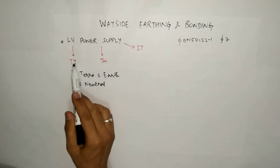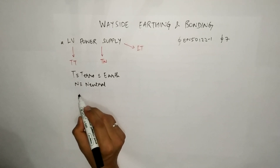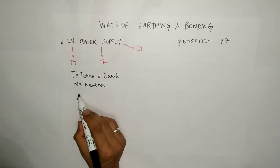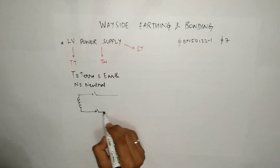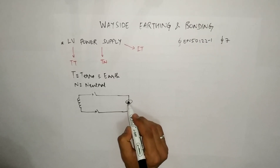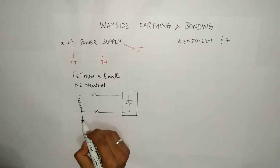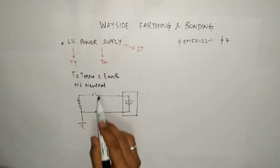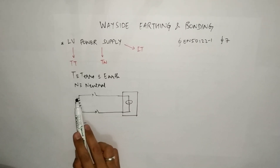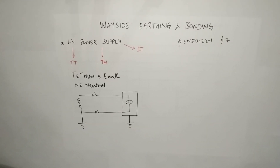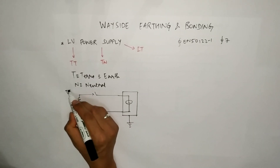Let us first go for TT. In this case, this is the secondary of the transformer — this is your source from where the LV power supply is coming. Then you have a breaker and it is directly fed to the load. This is the enclosure of your load or equipment, and it is connected to the earth at the source end. There is no separate transformer in between. The LV power comes directly to the equipment, and this equipment is also connected to earth, but completely separate from the source earth. This connection is the TT connection.